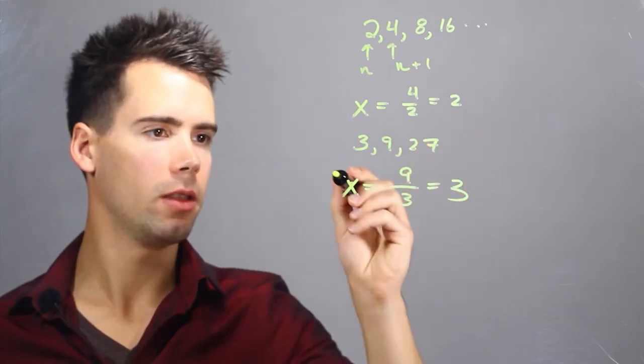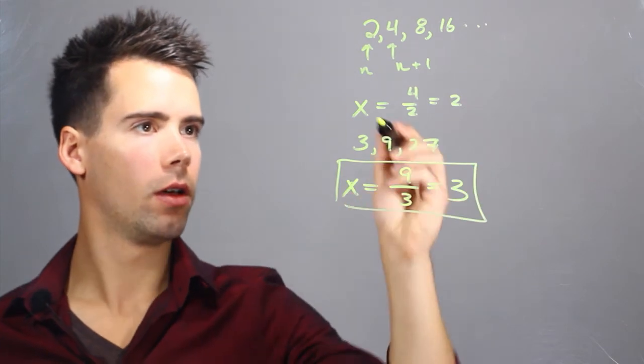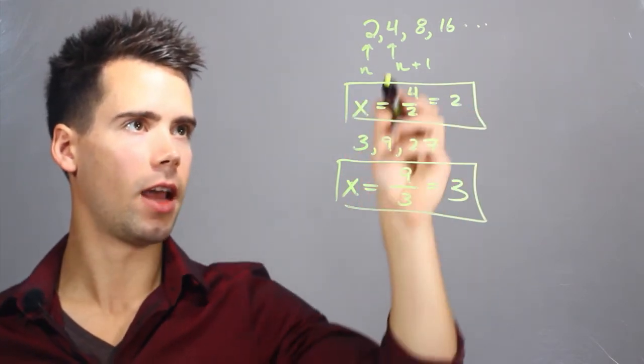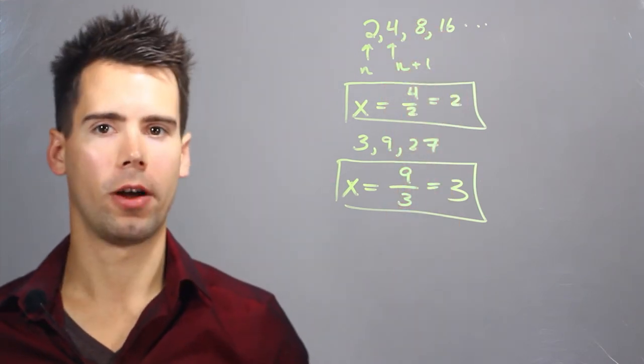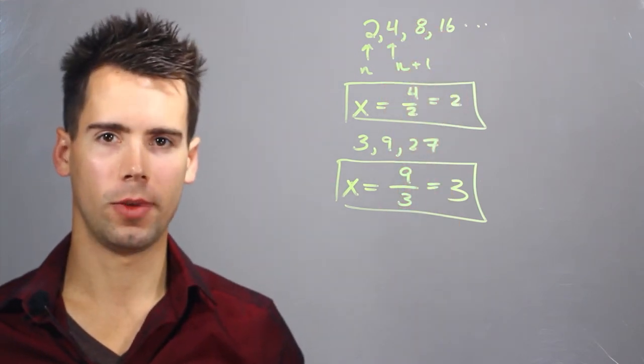And we've simply found the geometric ratio for both problems by dividing the higher level term by the lower one. I'm Ryan Ault and this is How to Find the X of a Geometric Sequence.